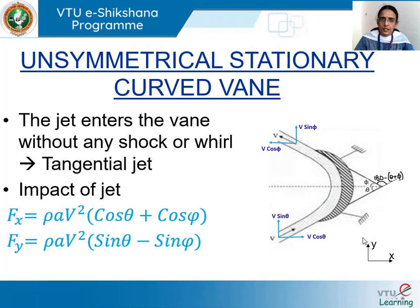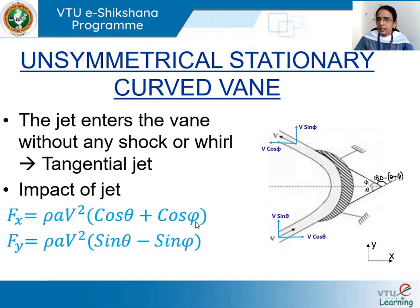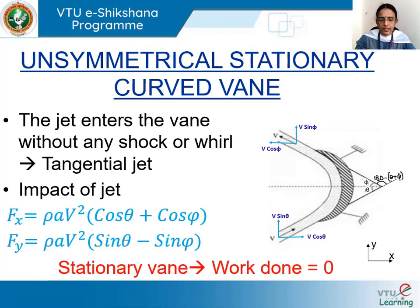Thus for a smooth frictionless curved vane that is held stationary and is unsymmetrical about the x-axis, when the jet enters tangentially, the impact of the jet is: Fx = ρav²(cosθ + cosφ) and Fy = ρav²(sinθ − sinφ), where ρ is the mass density, a is the cross-sectional area of the jet, v is the velocity of the jet, theta is the vane angle at the inlet, and phi is the vane angle at the outlet. If the vane is symmetrical about the x-axis, Fx = ρav²(2cosθ) and Fy = 0. Since the vane is stationary, work done by the jet on the vane is equal to zero.